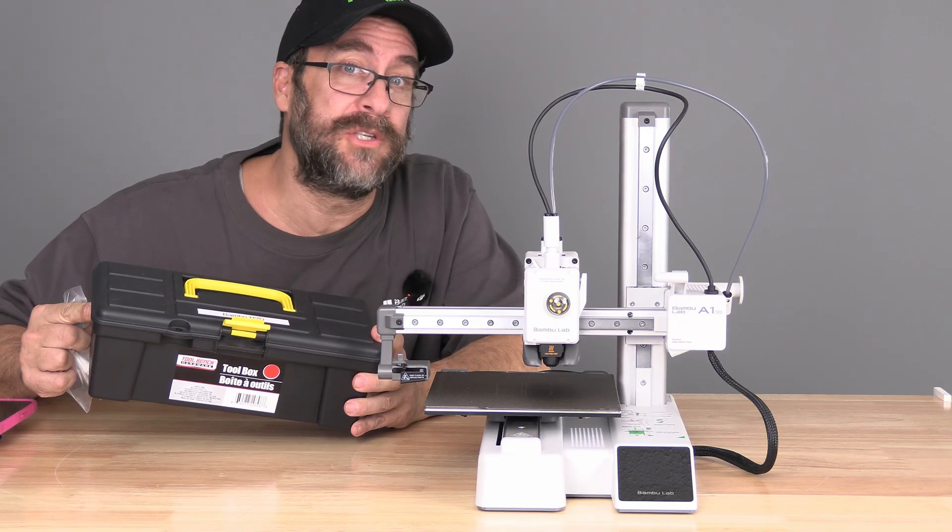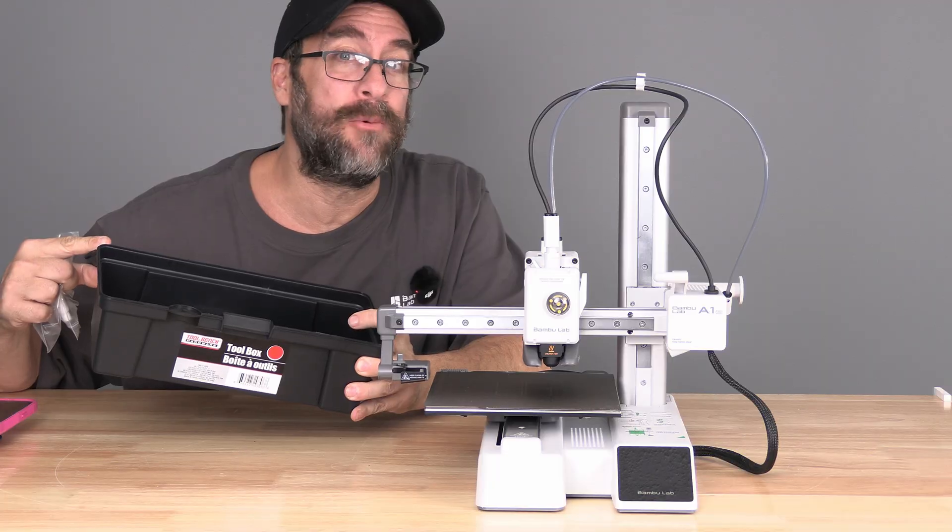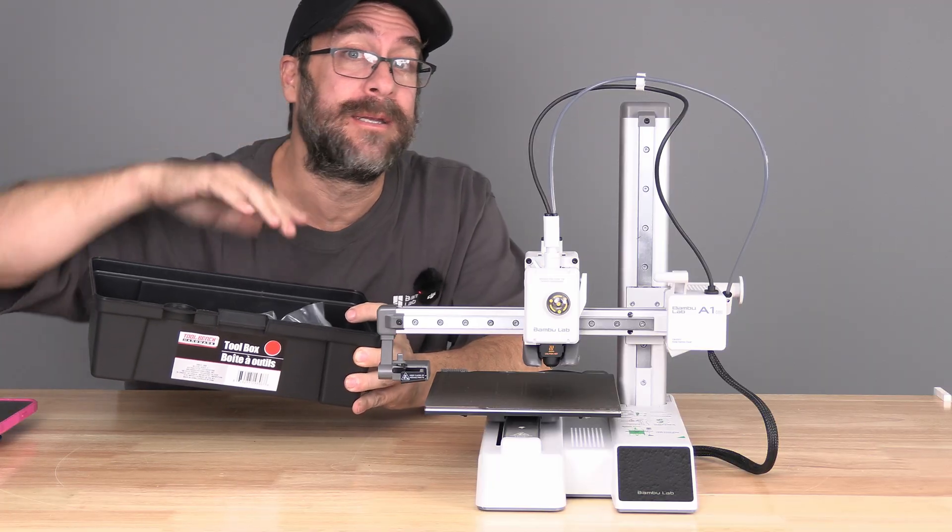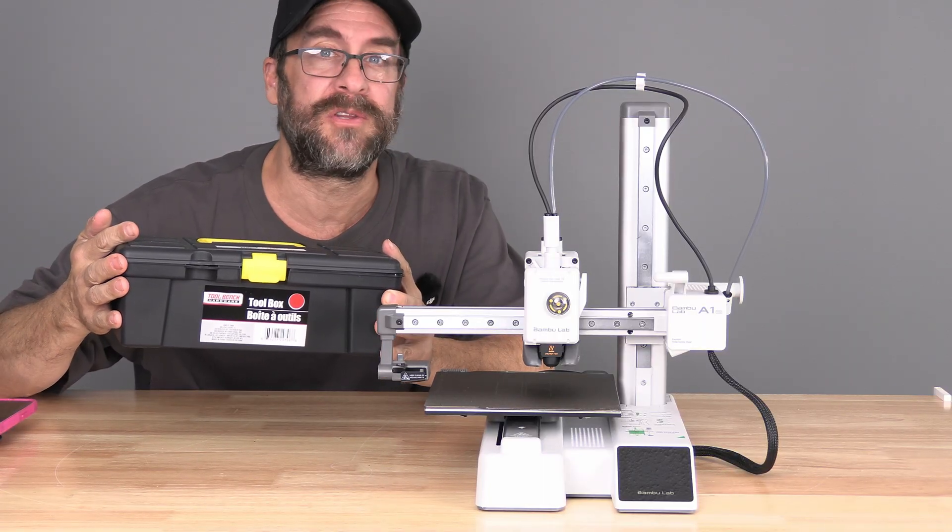Grab a cheap Dollar Tree toolbox or the one linked in my description. Write A1 Mini on the top and dump all of your tools and accessories in it. Keep this with your printer.